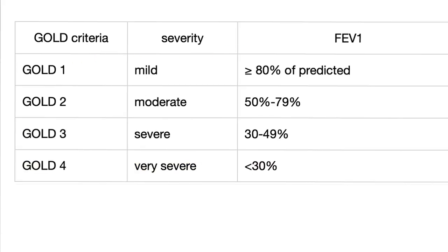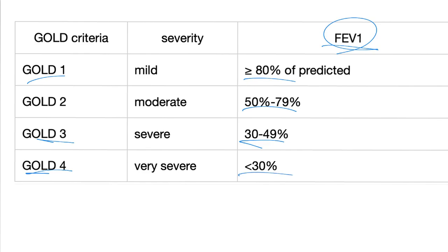Let's add some guidelines — the GOLD criteria: Gold 1, 2, 3, and 4. Gold 1 is mild, 2 is moderate, 3 is severe, 4 is very severe — based on FEV1. Gold 1: FEV1 ≥80% of predicted. Gold 2: 50–79%. Gold 3: 30–49%. Gold 4: less than 30% — this is very severe.